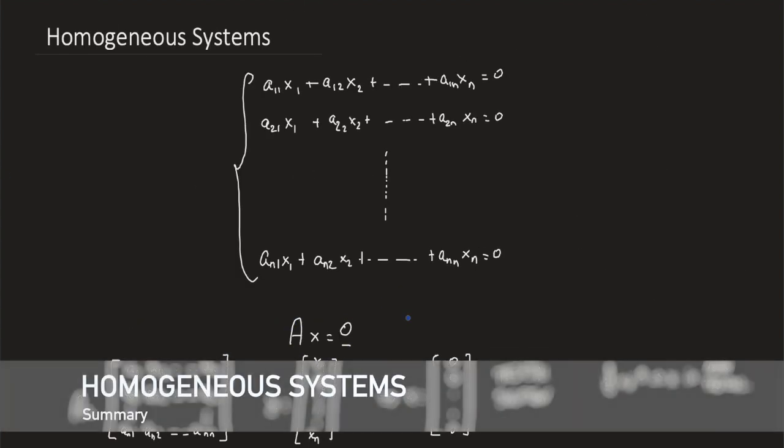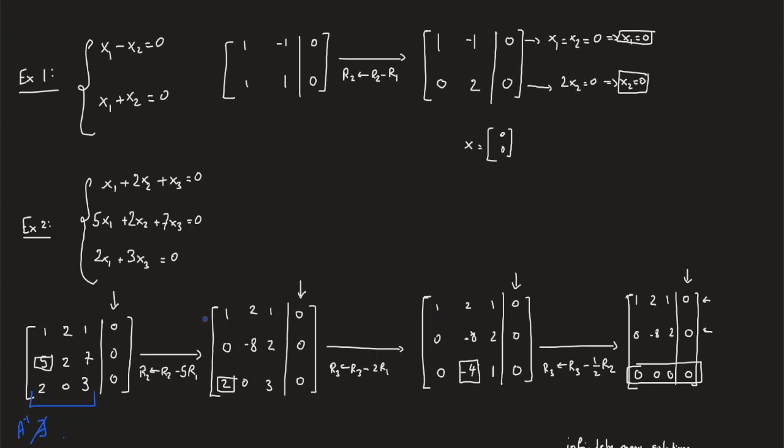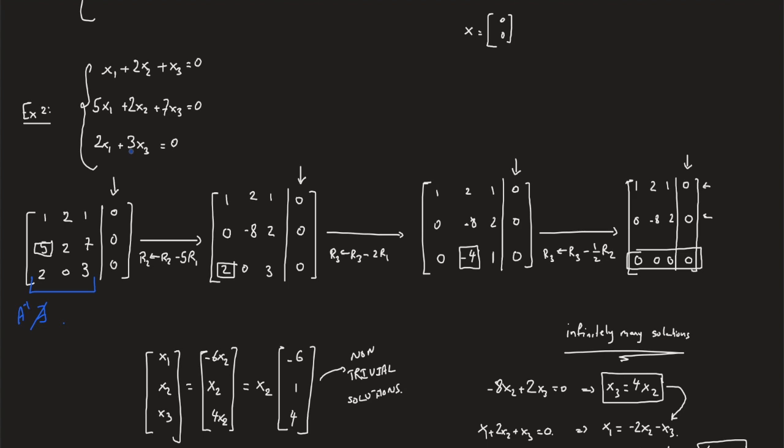In this lecture, we talked about homogeneous systems and how to solve them. To solve a system of the form Ax equals 0, we perform Gaussian elimination. If we tap upon an all-zero row, it means we have infinitely many solutions, because the last column is always 0, and hence b corresponding to the all-zeros row will always be 0. We can conclude also that the inverse of A, the coefficient matrix, does not exist because it admits non-trivial solutions.